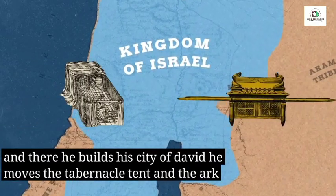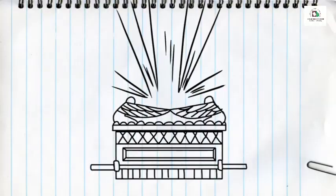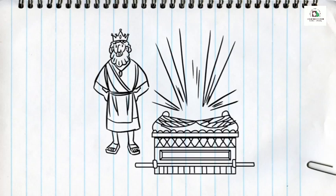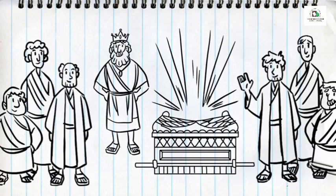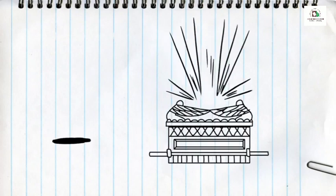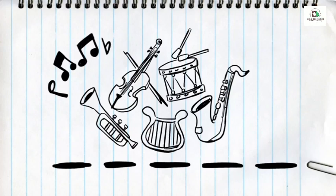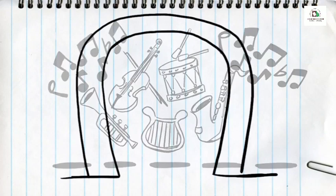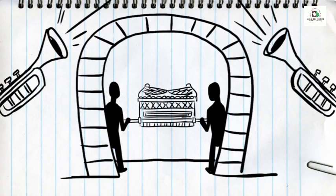David moves the tabernacle tent and the ark of the covenant to the new capital city in a glorious celebration. King David decided to move the ark to Jerusalem so that he could keep it safe. He gathered 30,000 of Israel's best men to move it. They loaded the ark on a cart and pushed it all the way to Jerusalem. While they moved the ark, David and the men celebrated with all their might, making a joyful noise to the Lord with all kinds of noisemakers as they traveled.